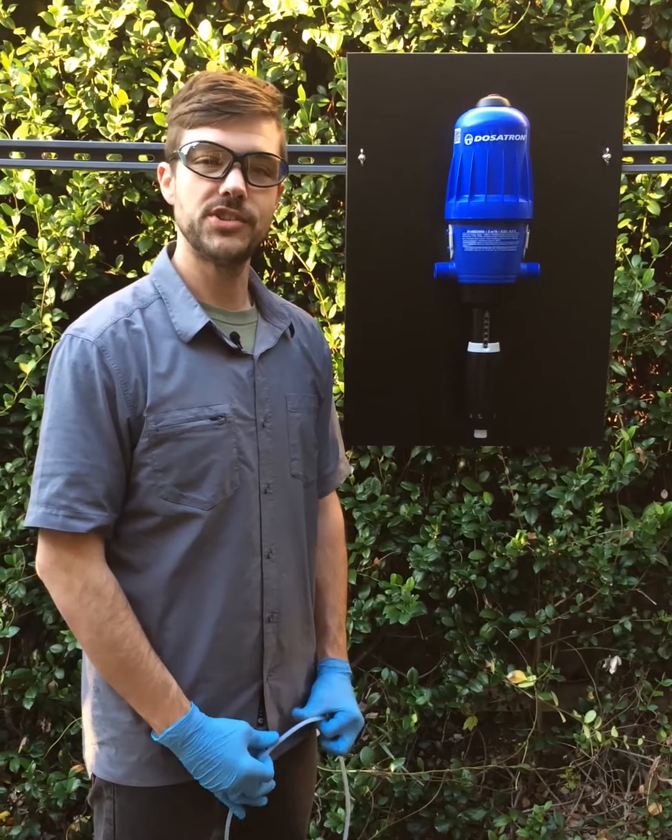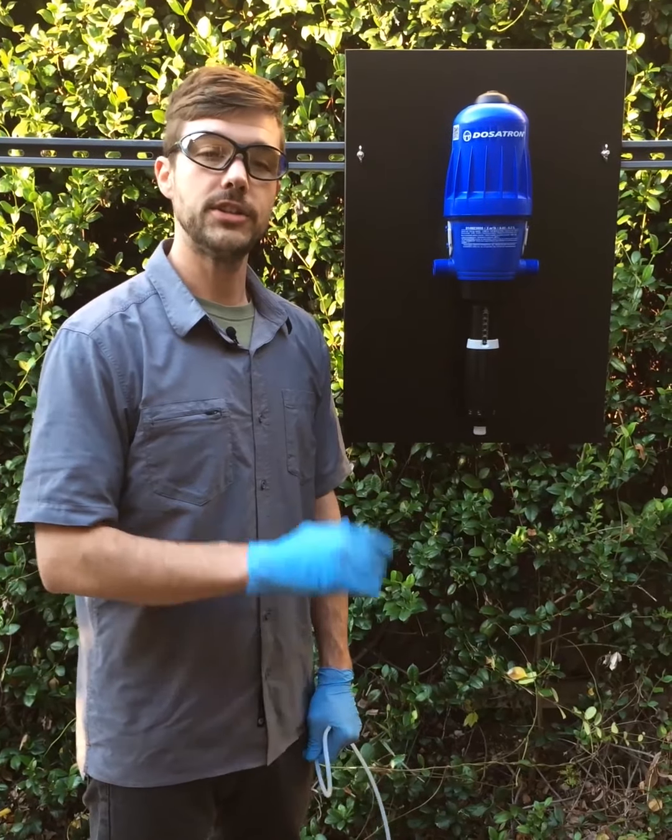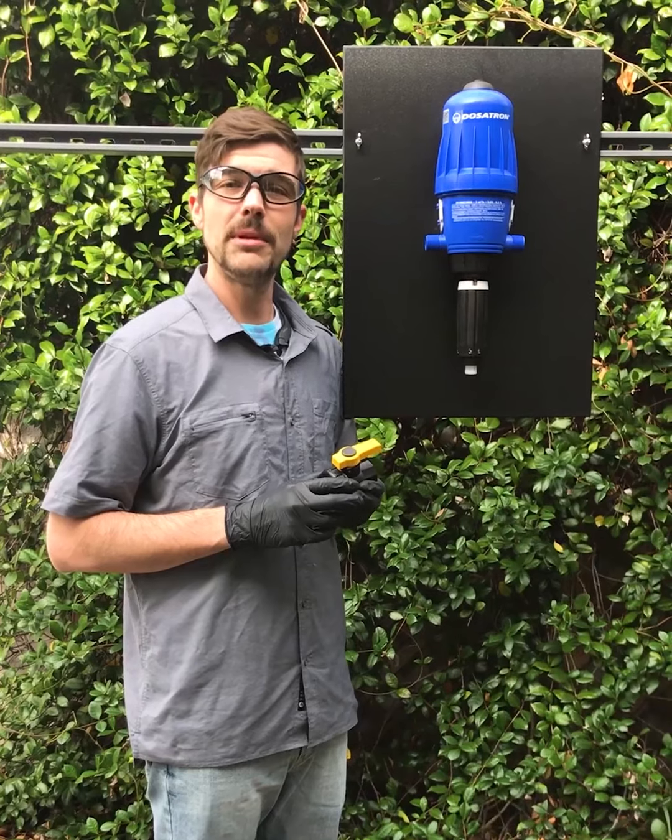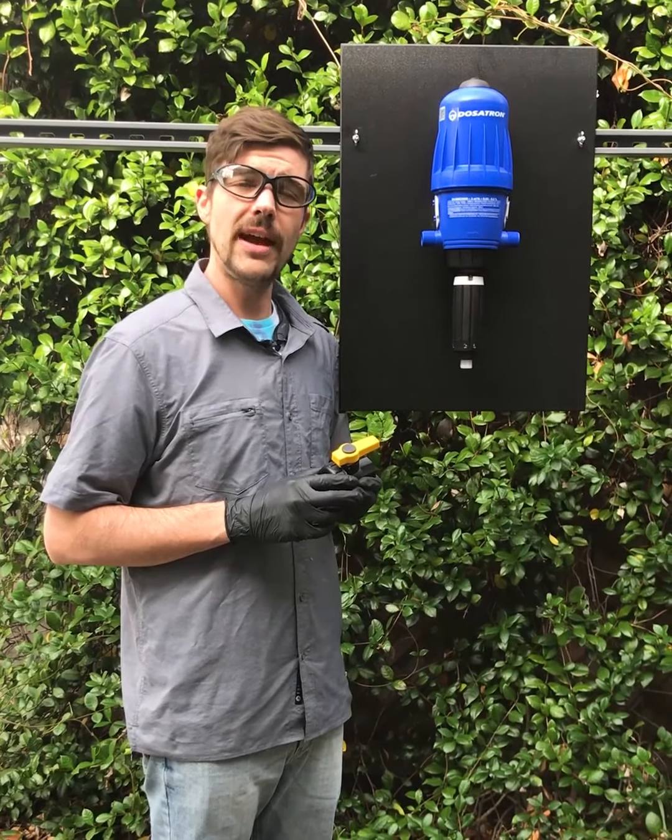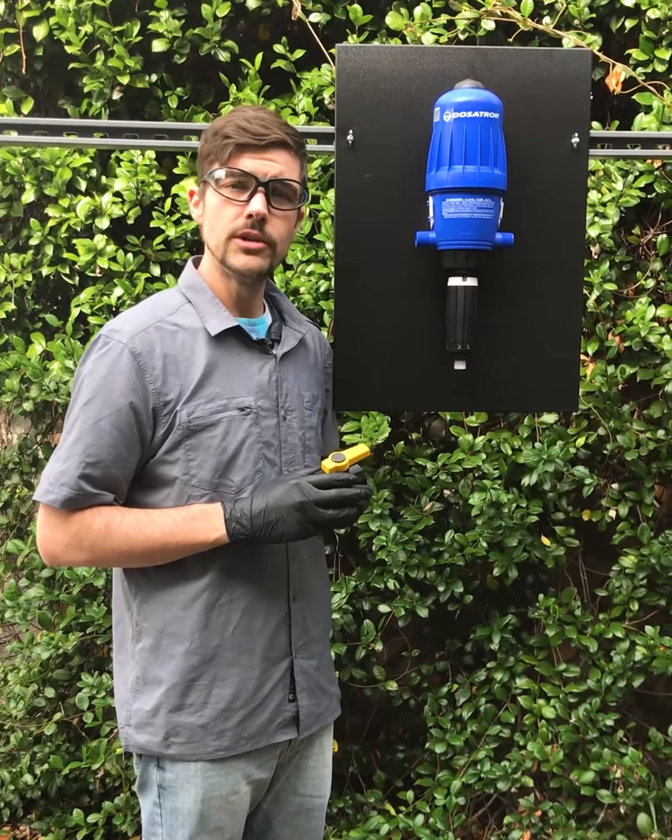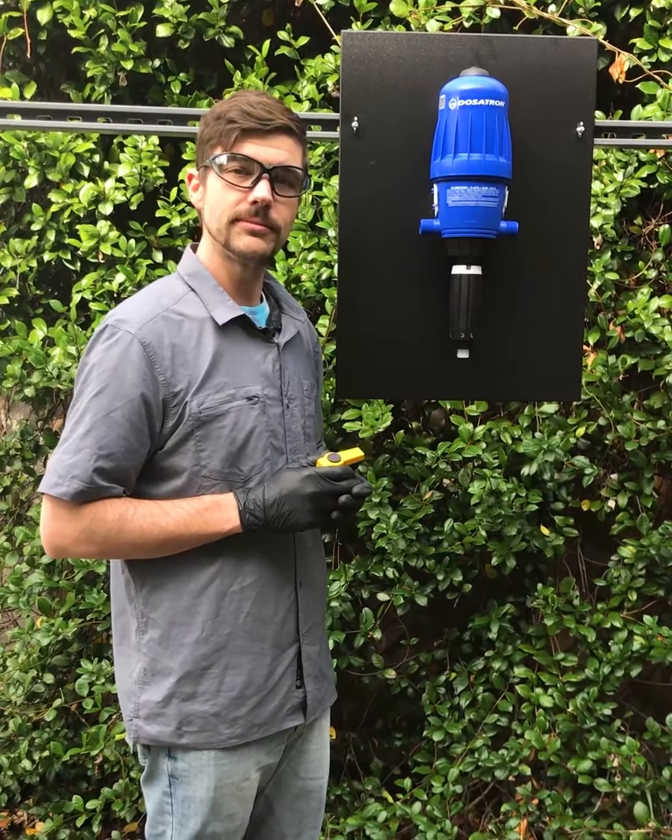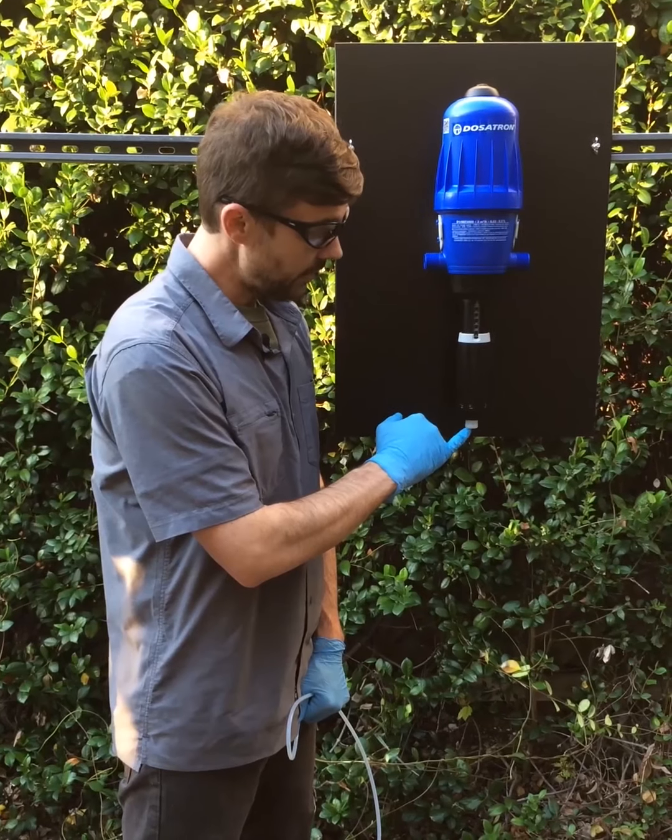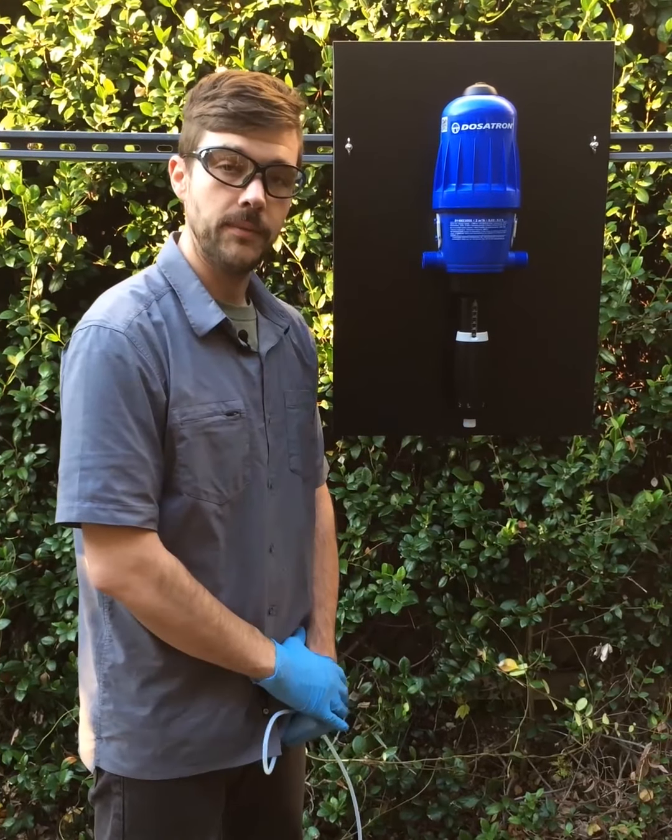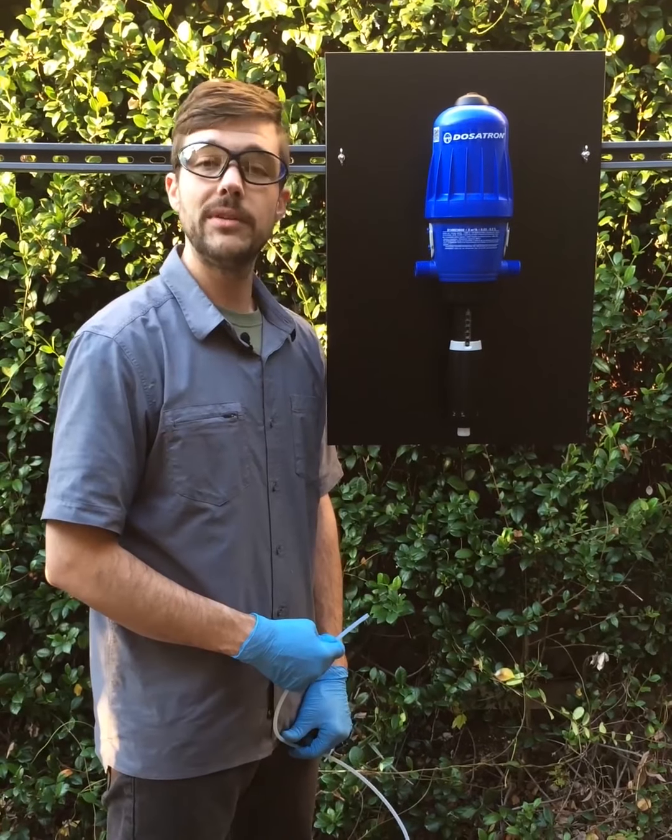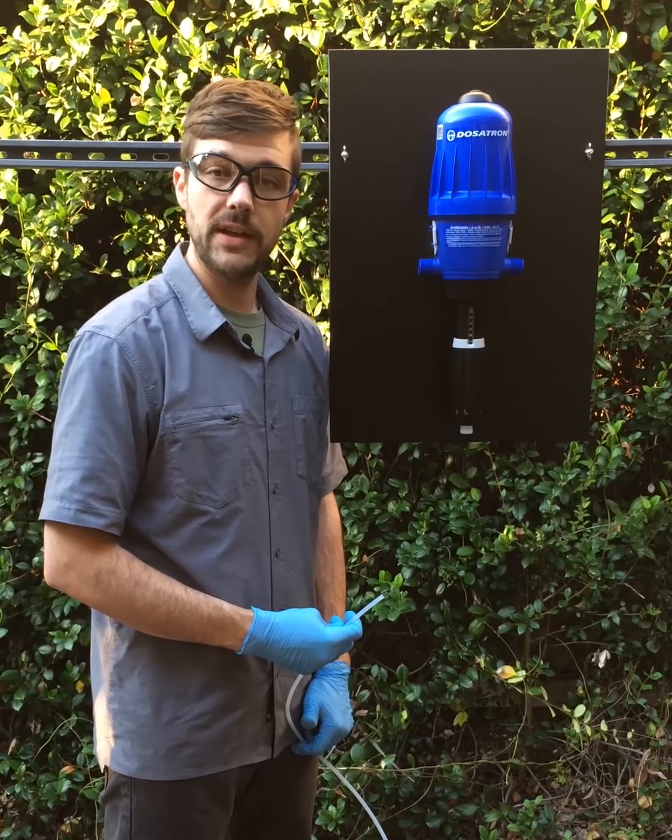Now that we've reinstalled our check valve, we want to go ahead and turn the unit on and let it run to check for any leaks. At this time, it may be beneficial to shut a valve downstream from the unit to apply back pressure on your system to help check for any drips or leaks. If you do notice any leaks coming from the check valve assembly down here, it is a good time to go ahead and replace it. Now that we've ensured that there is no leaks and the check valve is working, we're going to go ahead and reattach our hose assembly.